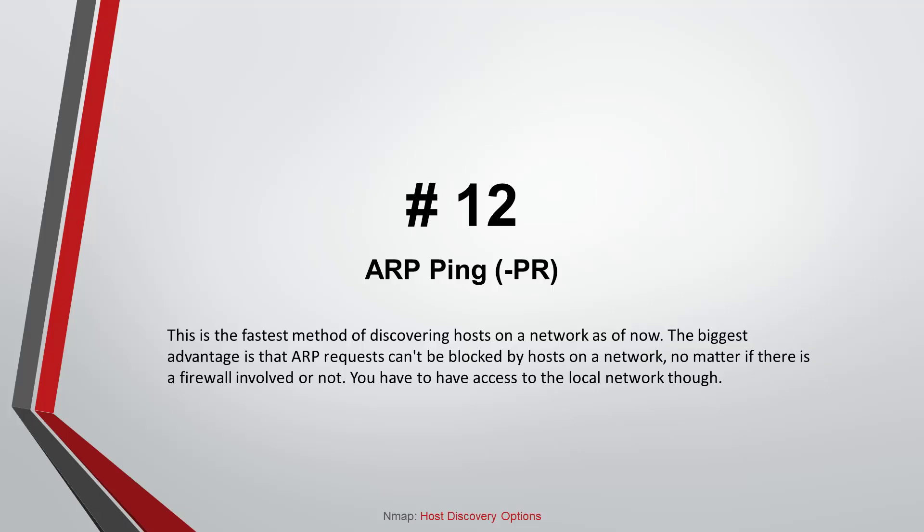Command number twelve: ARP Ping. This is the fastest method of discovering hosts on a network. The biggest advantage is that ARP requests cannot be blocked by hosts on a network, no matter if there is a firewall involved or not. You do have to have access to the local network, though.